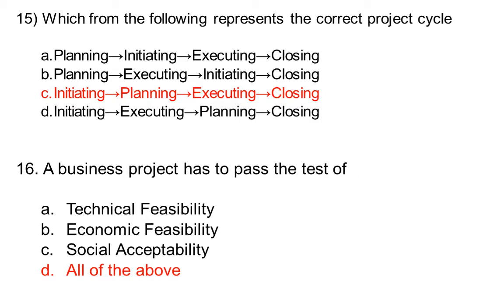Which of the following represents the correct project cycle? Option A planning, initiating, executing, closing. Option B planning, executing, initiating, closing. Option C initiating, planning, executing, closing. Option D initiating, executing, planning, closing. The correct answer is option C: initiating, planning, executing, closing.